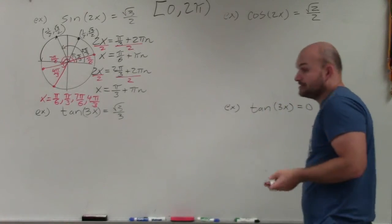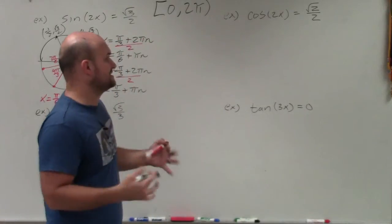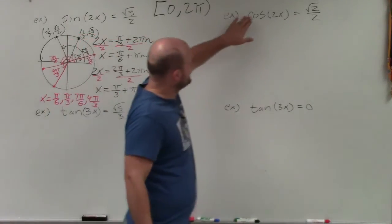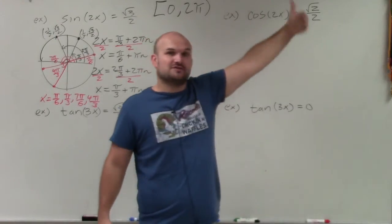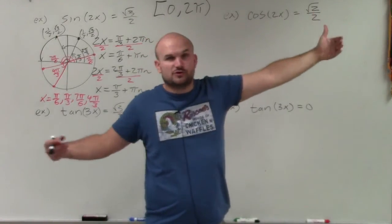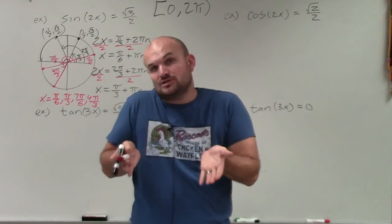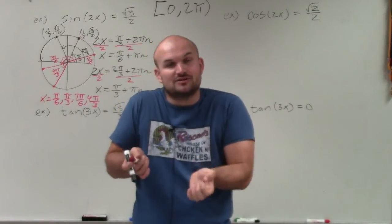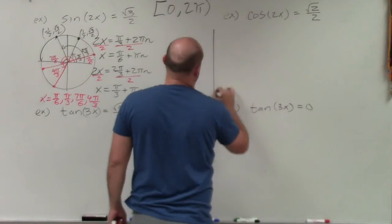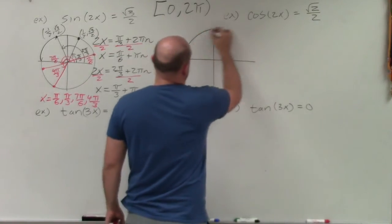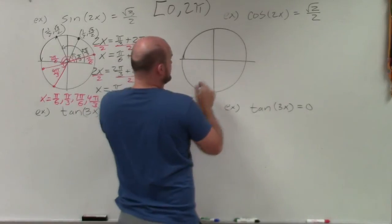Now let's move on to the cosine problem. Again, it's going to be basically the same process. We're going to take the inverse cosine of both sides. So we have 2x equal to the inverse cosine of √2/2. We need to figure out for what angles is cosine equal to √2/2. So again, we go to our unit circle.